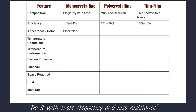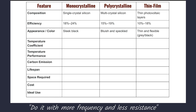The third feature is appearance or color. Mono-crystalline solar panels are uniform black or sleek black in appearance. Poly-crystalline panels have a bluish look. Thin-Film panels appear grey or black in color.